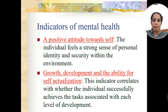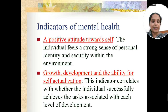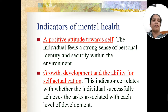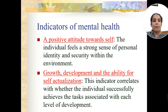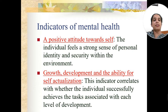The second indicator is growth, development, and the ability for self-actualization. This indicator relates to whether the individual successfully achieves tasks associated with their level of development. At different levels of development there are different life tasks — for example, in school age the task is to perform well in school; in adolescent age the task is to go to college, settle yourself, score well, choose a profession, and learn new things.